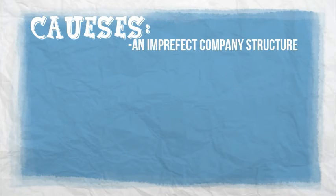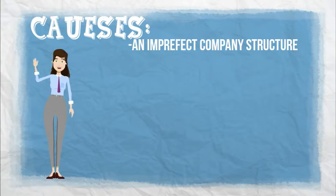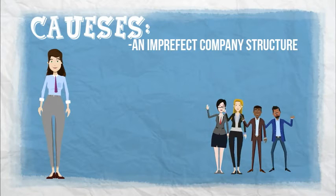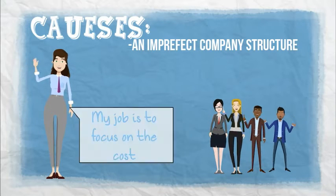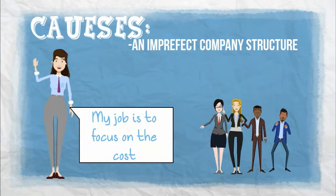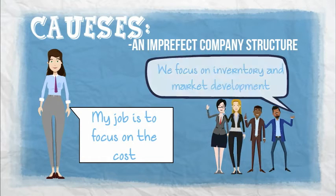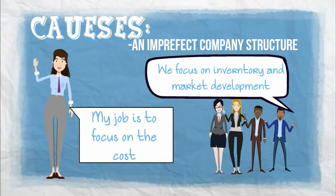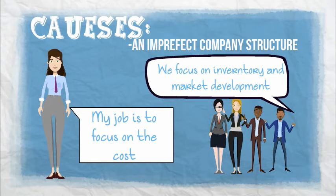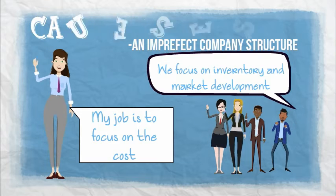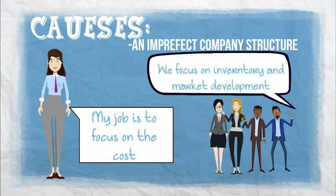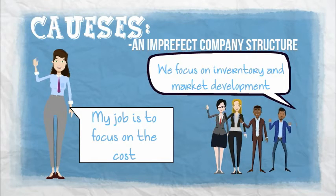Third, an imperfect company structure led to conflict. Within Hasbro Interactive, employees in different positions had different interests. Ms. Dyer kept an eye on costs when she replaced the CFO position. For managers, they focused more on inventory and product development. The change of the financial system negatively affected the interests of the management team.